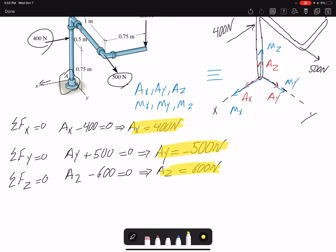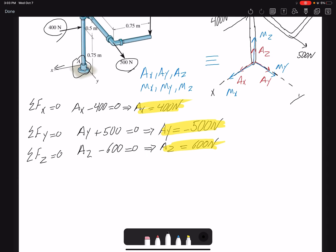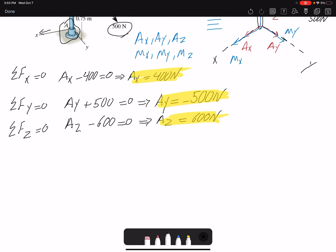To find the moments, I need to write my moment equations. I have the choice of 3D moment formulation R cross F, or simply use scalar formulation. In the scalar formulation, summation of moment about point A in X equals zero. So I have Ry·Fz minus Rz·Fy plus MX equals zero.